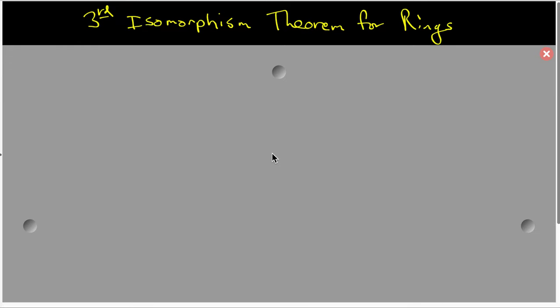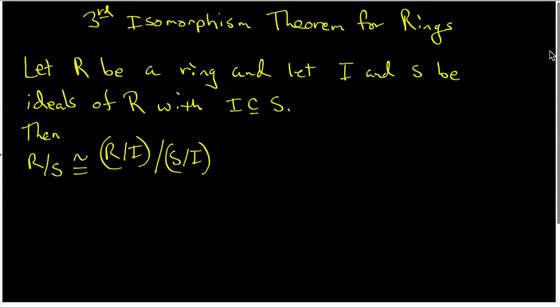In this video, I want to look at the third isomorphism theorem for rings. We're going to start by looking at the statement of the theorem. The theorem says that if we let R be a ring and we let I and S be ideals of R with I as a subset of S, then the quotient ring R mod S is isomorphic to the complex quotient ring R mod I modded out by S mod I.